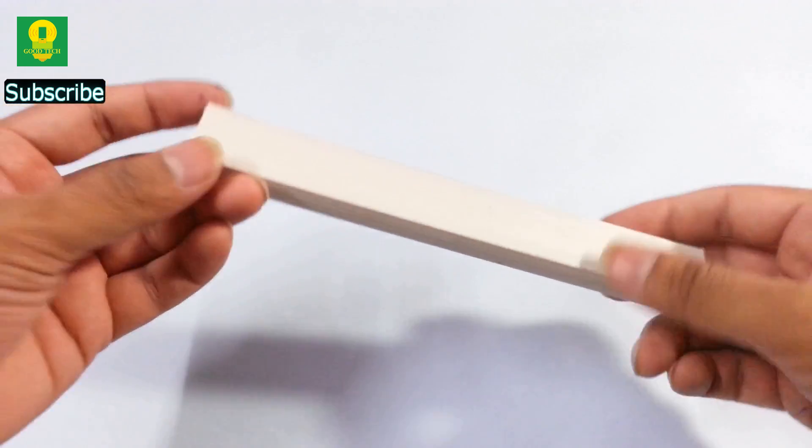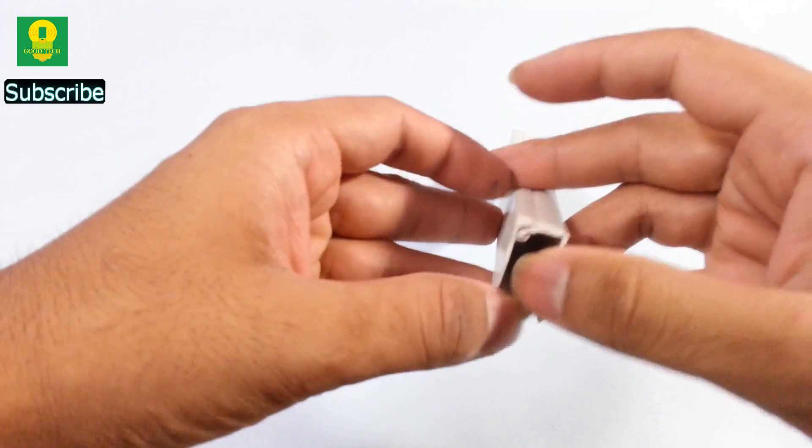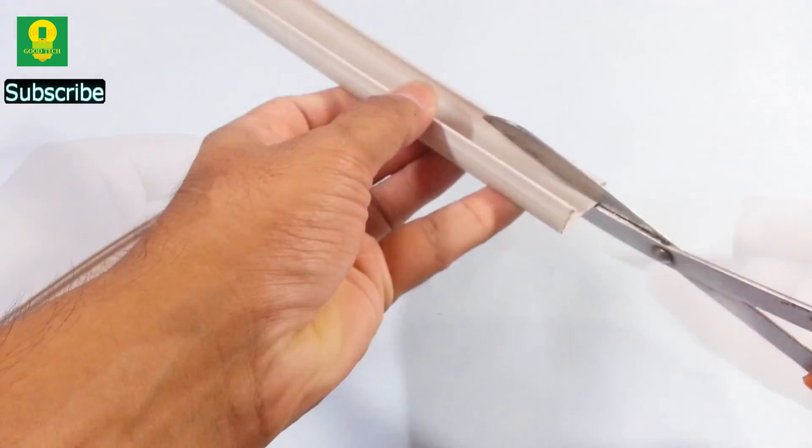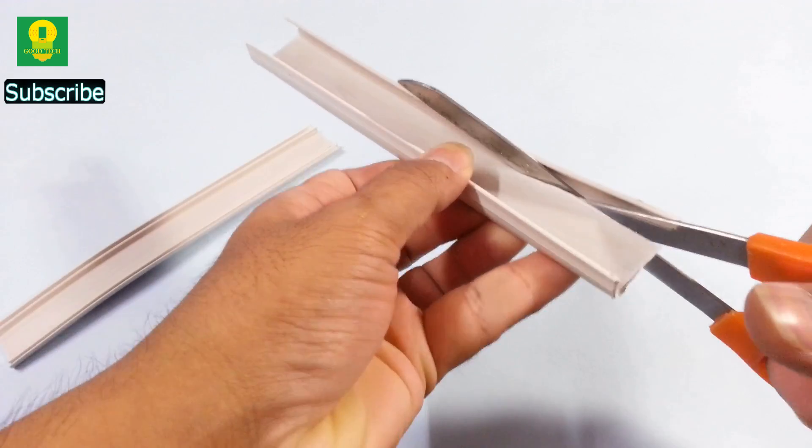To start, take a piece of electrical cable raceway, open it and cut the bigger portion to get a flat plastic strip.